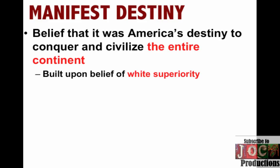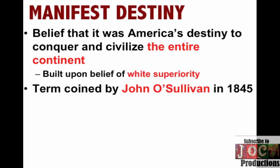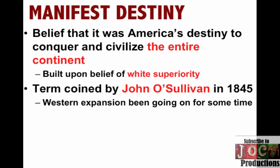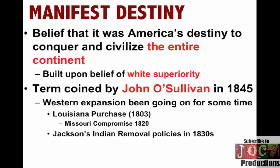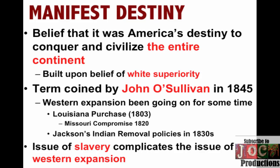The term Manifest Destiny was first coined by John O'Sullivan in 1845, a newspaper editor. But it's important to keep in mind that Western expansion had been going on for a very long time. From the moment the colonies are founded back in 1607 and onward, we've been moving west, and with that comes problems. We've seen this even in the early nation's history: the Louisiana Purchase under Thomas Jefferson in 1803, which brings up issues such as Missouri entering the Union and the Missouri Compromise, and Jackson's Indian removal policies in the 1830s. But what happens in the 1840s is the issue of slavery is going to complicate Western expansion more and more frequently — they compromised in 1820, but it's going to pop back up.